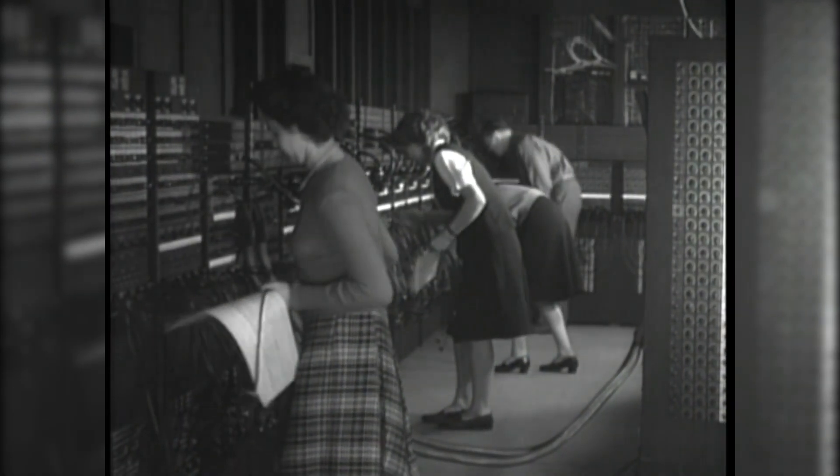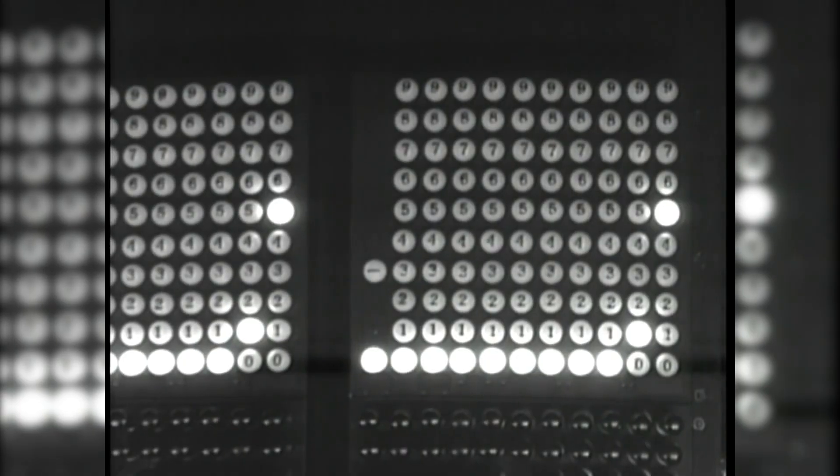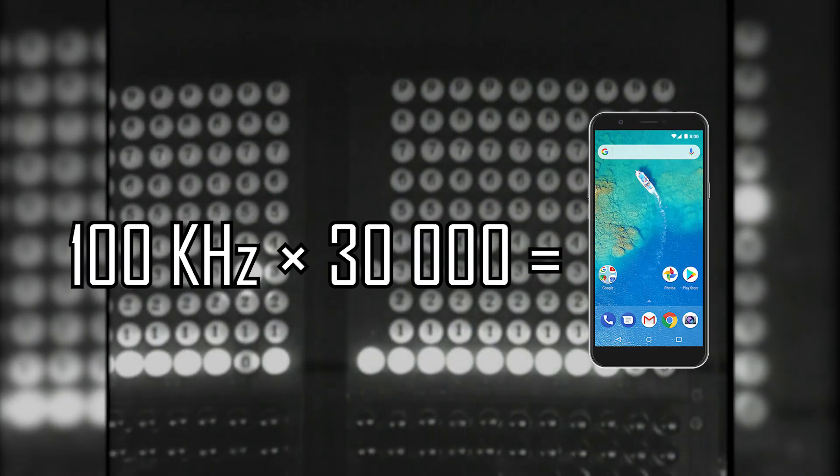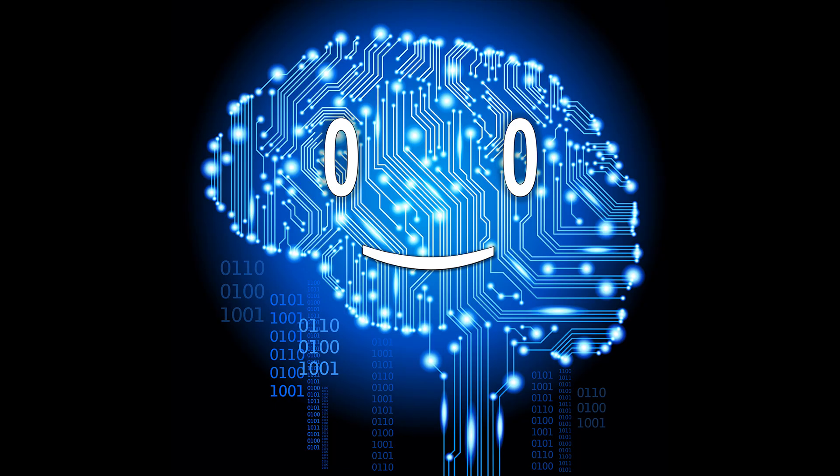So they poured all the taxpayer money into science and churned out this incredibly super fast processor with a clock speed of 100 kilohertz, 30,000 times slower than your phone processor. But it was enough for what they needed, as it was completing those complex ballistic calculations in only 30 seconds.